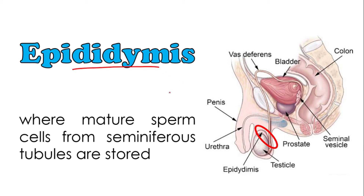The epididymis is the organ where mature sperm cells from the seminiferous tubules are stored. So once the seminiferous tubules inside the testes produce mature sperm cells, those sperm cells will be stored in the epididymis, which sits on top of and is attached to the testes.